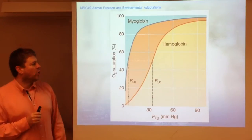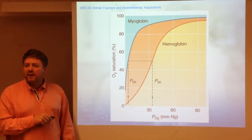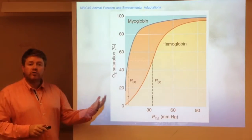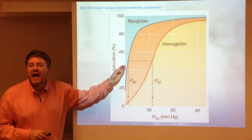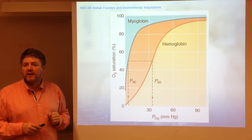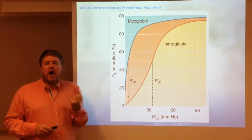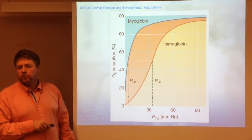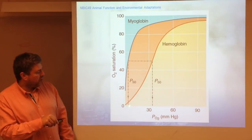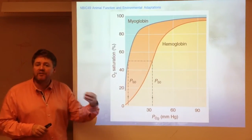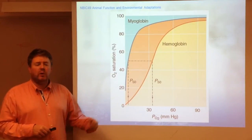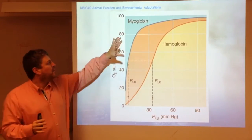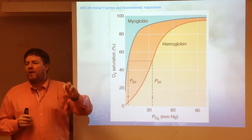Just to remind you of what myoglobin is: myoglobin is a respiratory pigment present in muscles. Comparing the curve for myoglobin with the curve for hemoglobin, what's characteristic about myoglobin is that it has a very high binding affinity for oxygen. It means that myoglobin will have a hard time releasing oxygen and will only do so at much lower partial pressures — pressures that will be reached at the tissue level. So myoglobin is an important protein for diving animals.